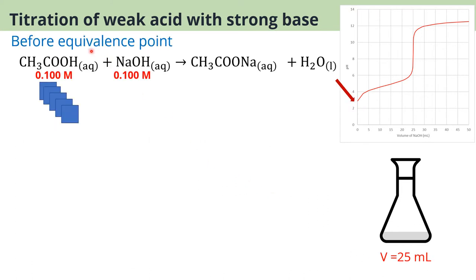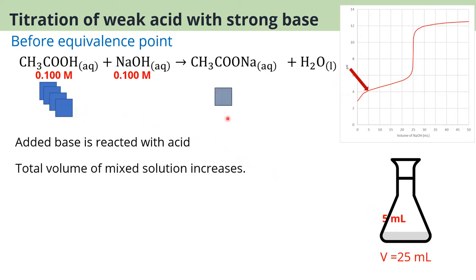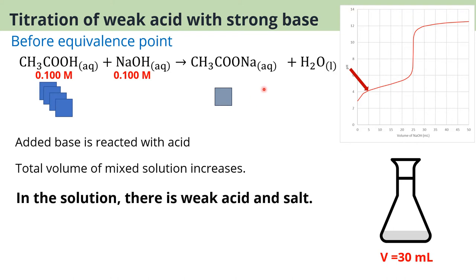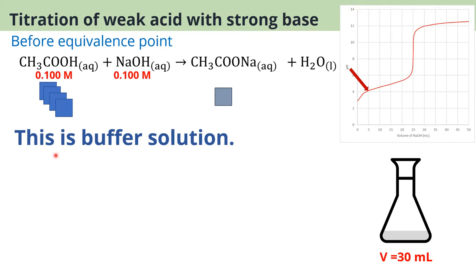Moving on to before equivalence point: if we add 5 ml of the base, the added base reacts with acid and produces a salt, and the volume increases to 30 ml. The species present right now are weak acid and salt. This is a buffer solution — a solution made from the weak acid and its conjugate base from the salt.